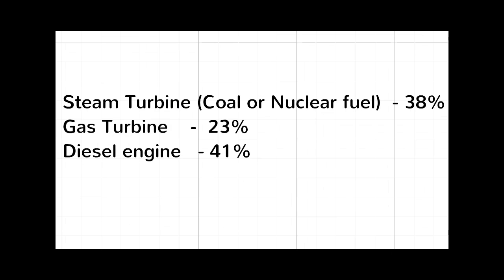So we can consider some of the actual heat engines which are used to generate electricity. For an example, the steam turbine which uses coal or nuclear fuel has efficiency about 38%. When it comes to gas turbine, efficiency is very less, that is about 23%. And the highest one may be the diesel engine at about 41%. So you can see, in actual power plants, the efficiency is very much low, less than 45%. A huge energy loss is taking place.